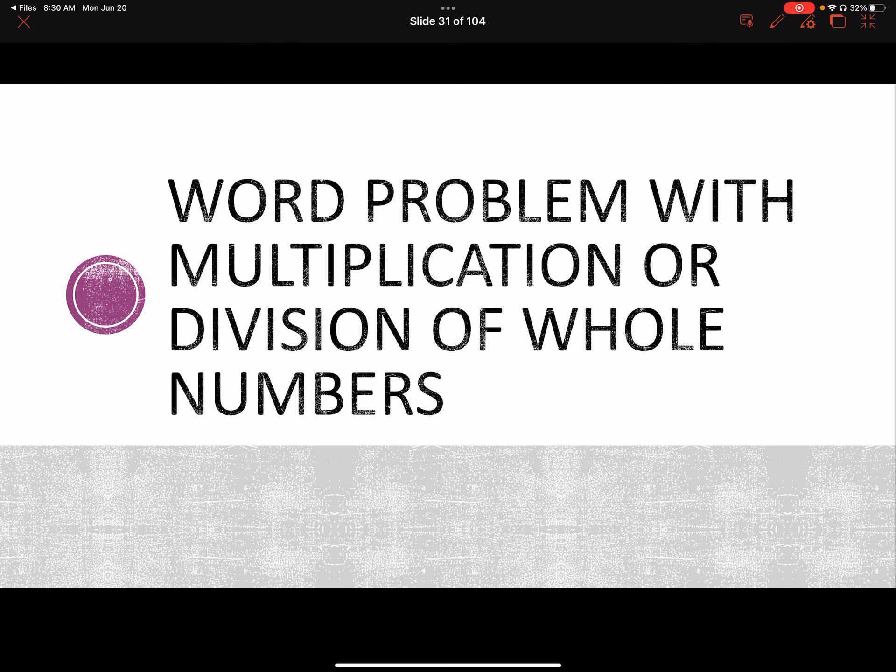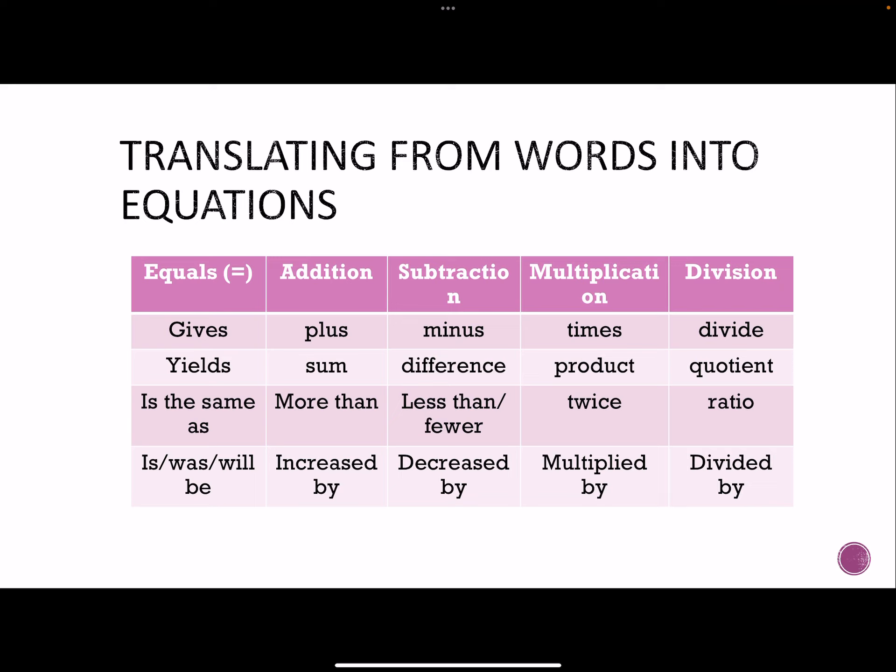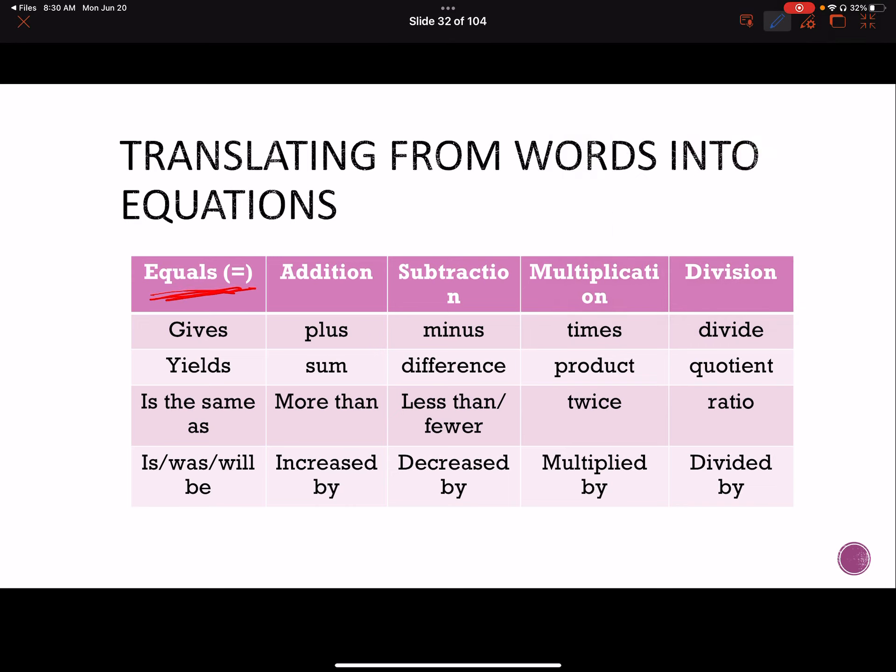In order to do that, I have this nice little table of translating from words into equations. So as you can see for equals, we wouldn't just say flat out equals. We would say gives, yields, is the same as. There's lots of different words, even more than what's on this table, but I think this table gives us a good start.